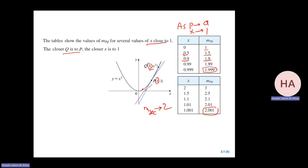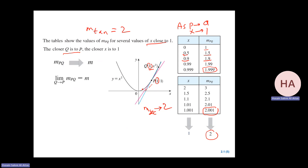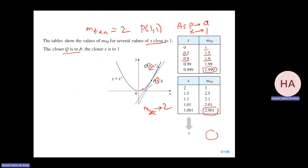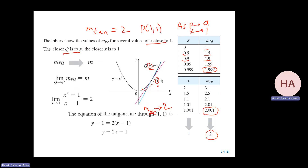So the slope of the tangent will be 2. I have the slope of the tangent, which is 2, so I can find the equation. Since I know the point, which is (1,1), I can get the equation of the tangent line. In summary, the slope of the tangent line will be the limit as X goes to A.